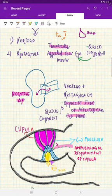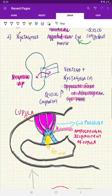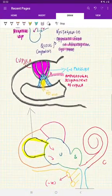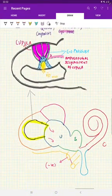This flow has been ampullofugal flow, and as a result of that, the vestibular ocular reflex—remember, that is the reason for the nystagmus—that will cause the quick component opposite to the side of affected ear. And this is the explanation for this change in the direction of quick component in the nystagmus.